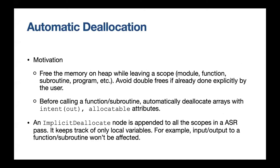Then comes automatic deallocation. The motivation is that whenever we are leaving a scope, we should free the heap memory related to that scope — all the local variables — and avoid double frees. If the user has already deallocated an array, we don't need to do that again, otherwise it leads to memory corruption.